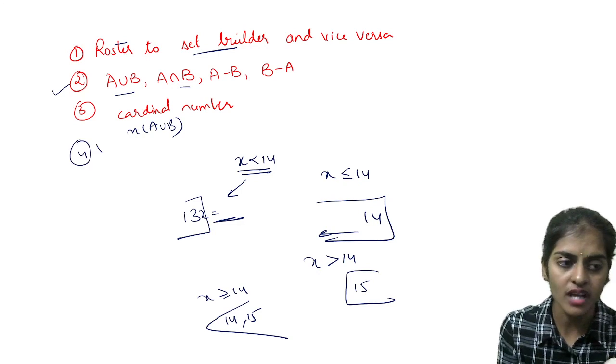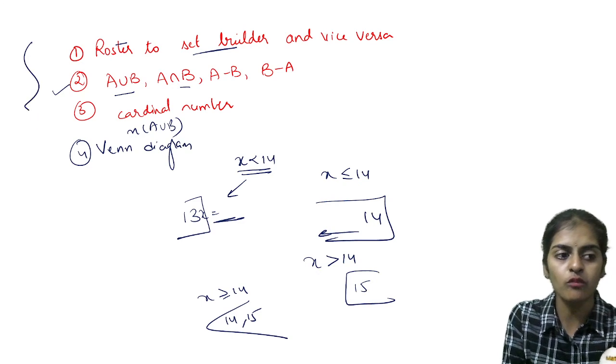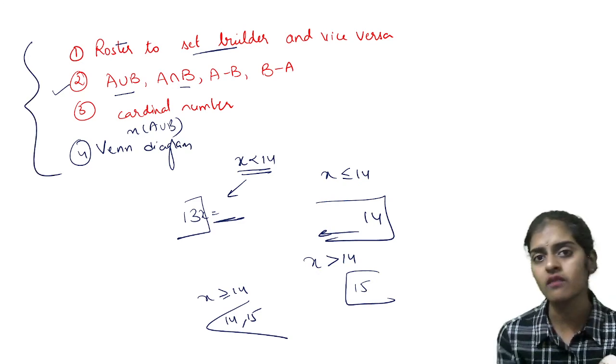Apart from this, they are also asking you to draw the Venn diagram. So set chapter is very simple chapter. Only these four models you have. You don't solve all the questions.